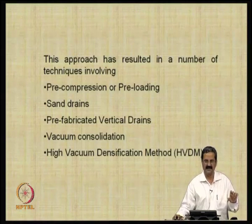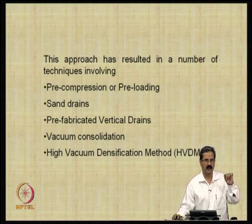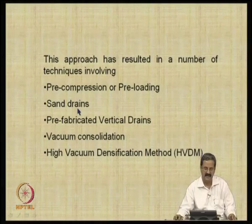A classical example: if you do a consolidation test in a triaxial test on clay, you put filter papers at the top and bottom and surround the sample with filter paper to provide vertical drains. There is a big difference in the consolidation process — it could be three or four times faster. The process of combining both vertical and radial consolidation has been used with sand drains since the 1930s. Now we have what are called prefabricated vertical drains, which are much more advanced.